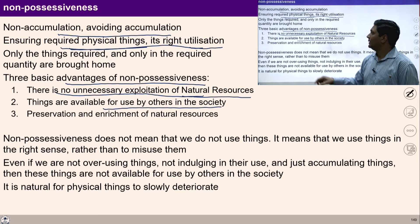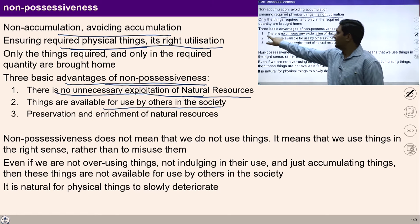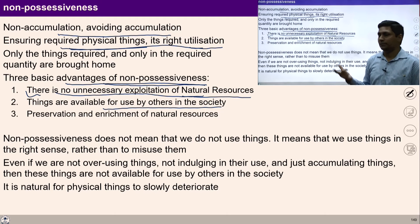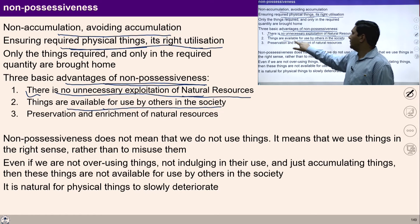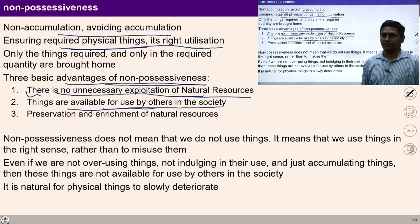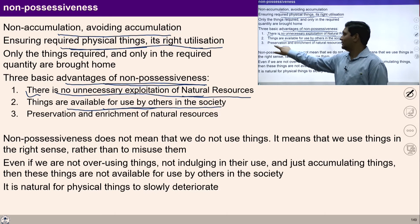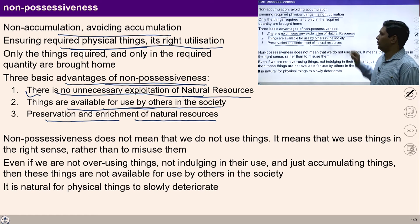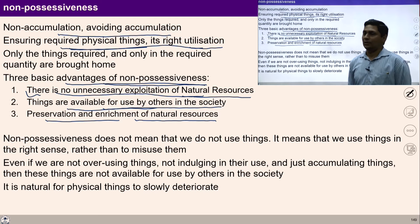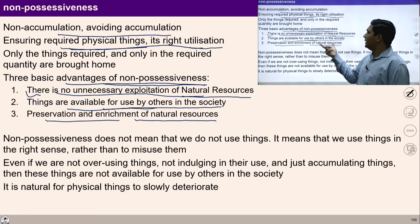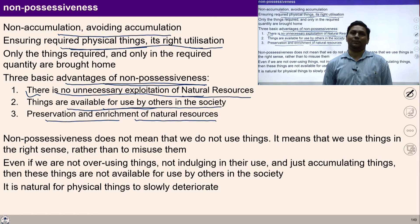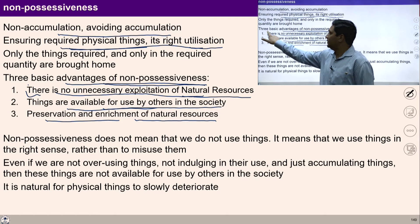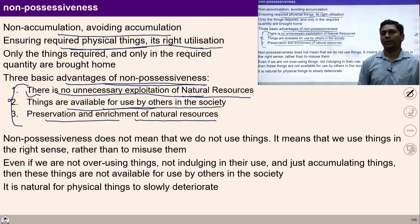Our life gets organized in terms of physico-chemical things by living with non-accumulation. There are three basic advantages of non-possessiveness: one, there is no unnecessary exploitation of nature; two, things become available for other people; and three, preservation and enrichment of natural resources happens naturally. Once I am able to identify my needs and right-utilize things, preservation and enrichment of natural resources becomes natural.